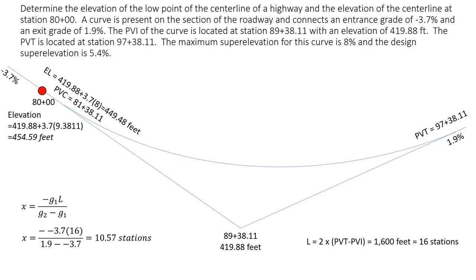Pulling in our numbers we have minus negative 3.7, so that cancels out. So 3.7 times 16 over 1.9 minus negative 3.7, so again those negatives cancel out, you end up with a positive. That gives us an x of 10.57 stations.